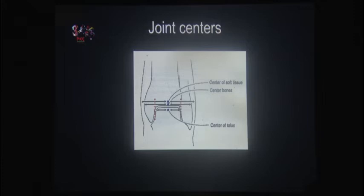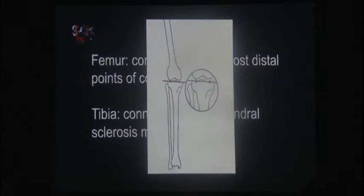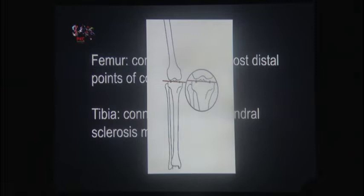For the distal tibial joint center I use the center of the talus, which is a fine reference. So there are four joint centers in total — we assess both bones individually; the femur and tibia each get their own assessment. Having defined joint centers, we then define joint lines. The joint line represents the orientation of the knee. For the femur, it connects the most distal points of the condyles; for the tibia, it follows the subchondral sclerosis.